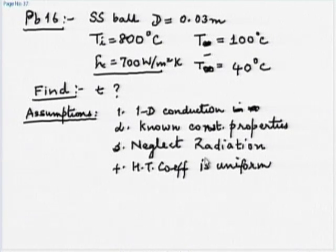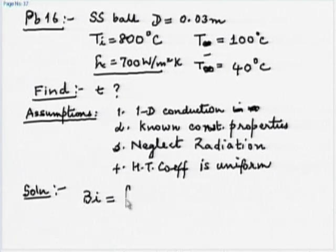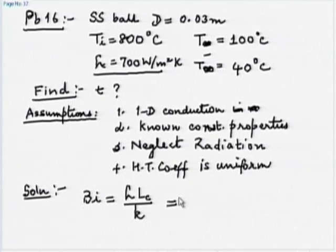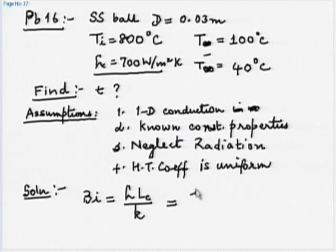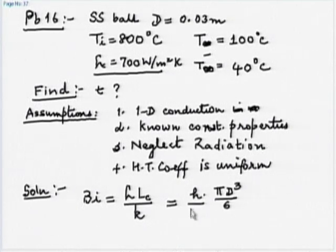The first check in a transient conduction problem is whether Biot number is less than 0.1. For a sphere, the characteristic length is volume over area, which gives pi D cubed over 6 divided by pi D squared, yielding D over 6. So Biot number equals H times (D/6) divided by k.